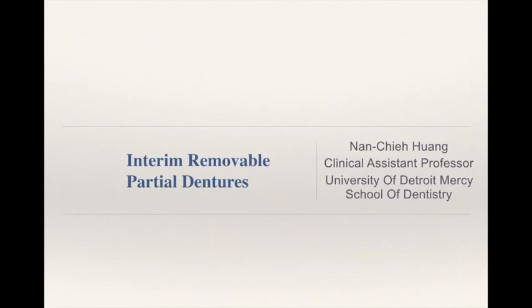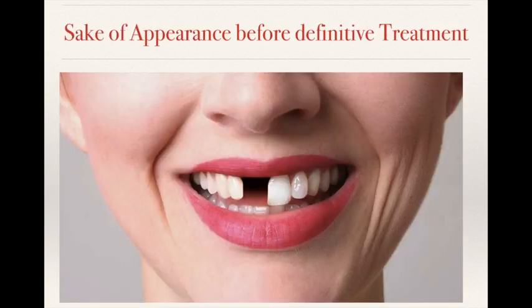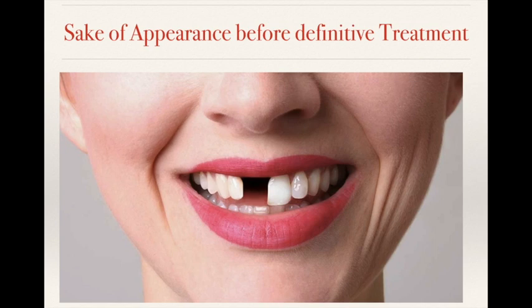Today we will discuss a minor but very important topic related to interim removable partial dentures. Why do we need interim removable partial dentures? Because they can provide several functions during treatment. First, they can provide the appearance and function before a definitive treatment. We all know when patients lose a tooth, function and aesthetics are the two most important factors patients care about. But we are not able to treat that right away because we have to be sure the oral environment is good enough to proceed. That's why we can use the interim prosthesis as a tool to provide appearance before definitive treatment.